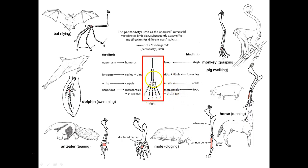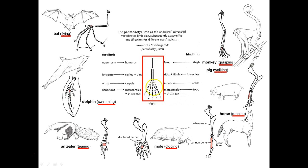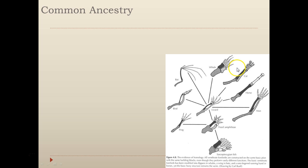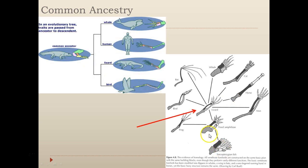One bone — humerus — two bones — radius and ulna — a bunch of blobs — your carpals — and then metacarpals and phalanges. All of these animals even have a thumb, with only three bones as opposed to four. Bats adapted that plan for flying, dolphins for swimming, anteaters for tearing, moles for digging, horses for running (losing some fingers), pigs for walking, and monkeys for grasping. The same plan — one, two, blobs, five — appears across all these different animals, implying they share a common ancestor who had that plan. You can even see this in fossil amphibians: one, two, blobs, and five digits. That is a homologous structure: the same plan in different organisms, implying a common ancestor.